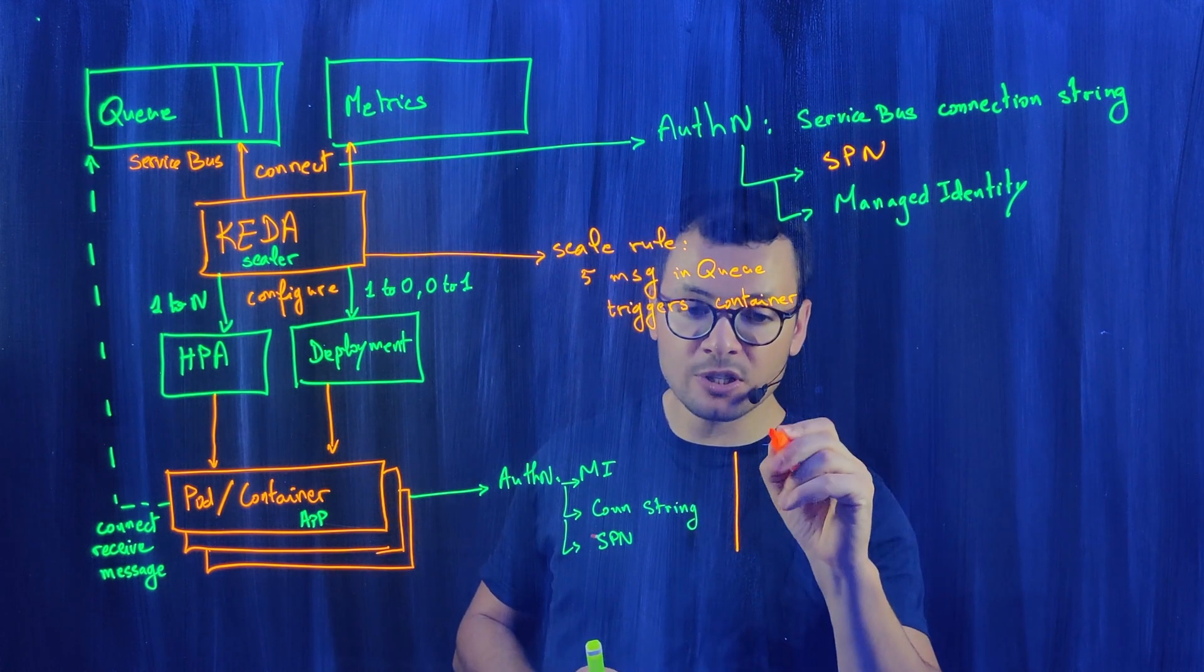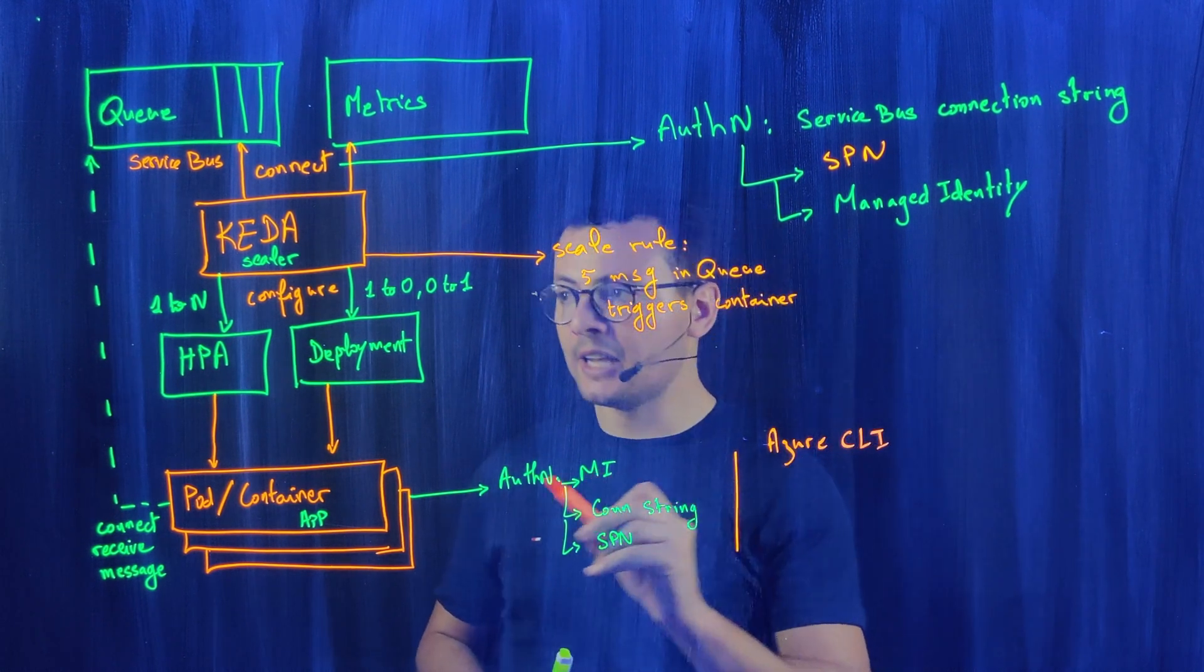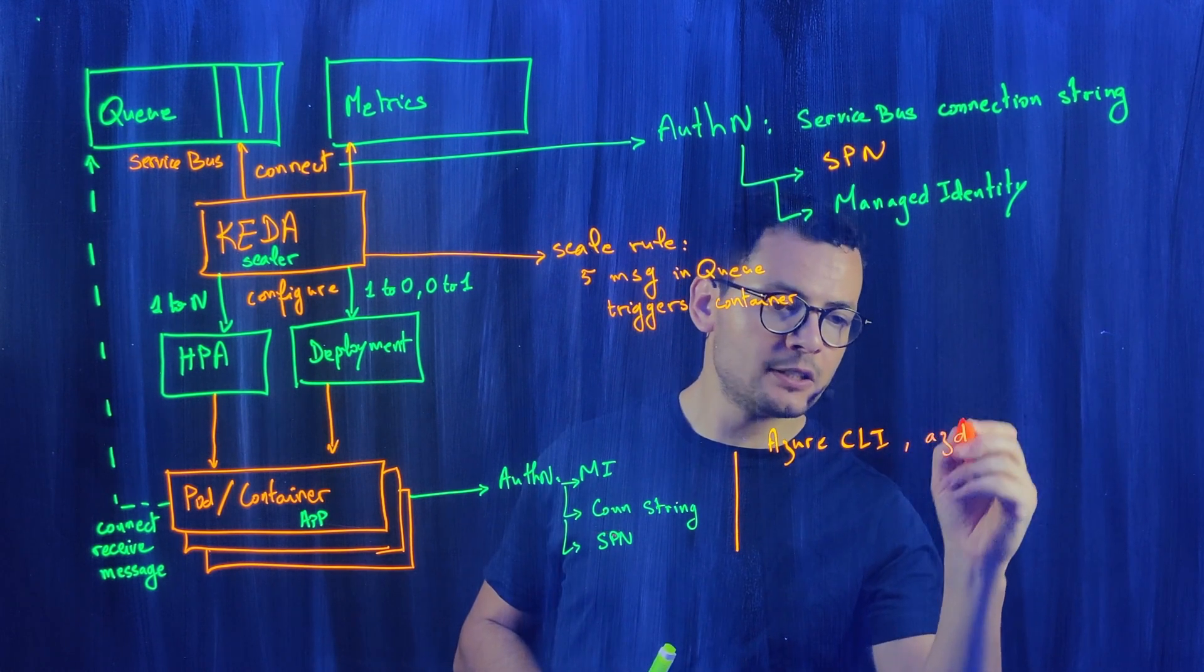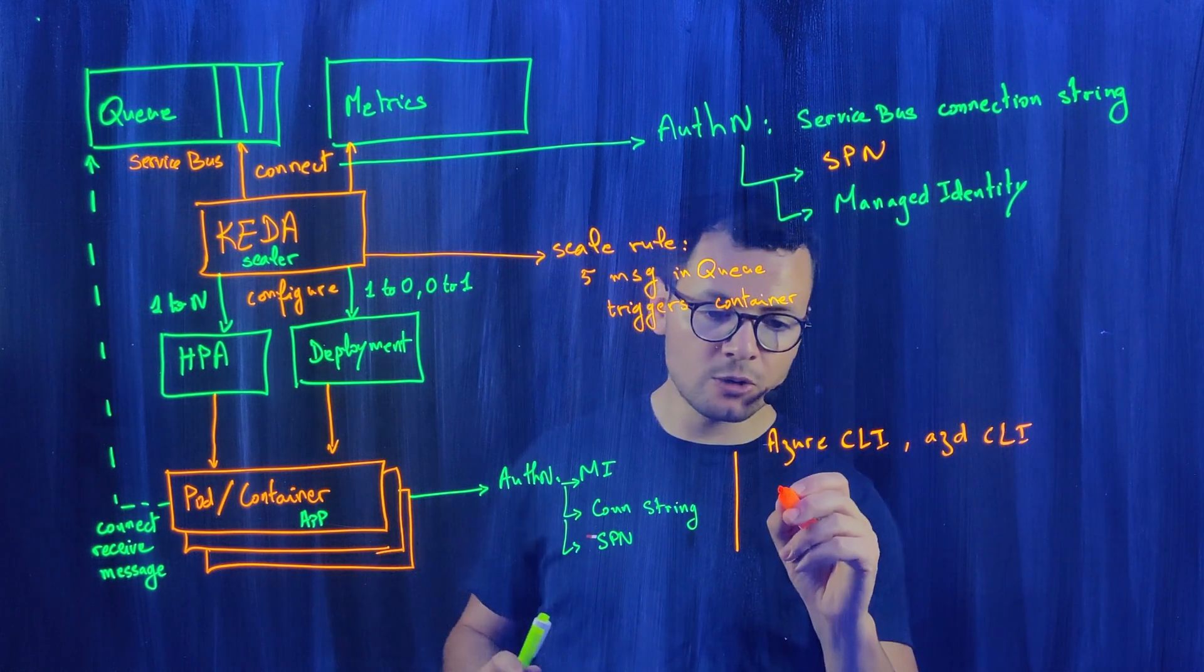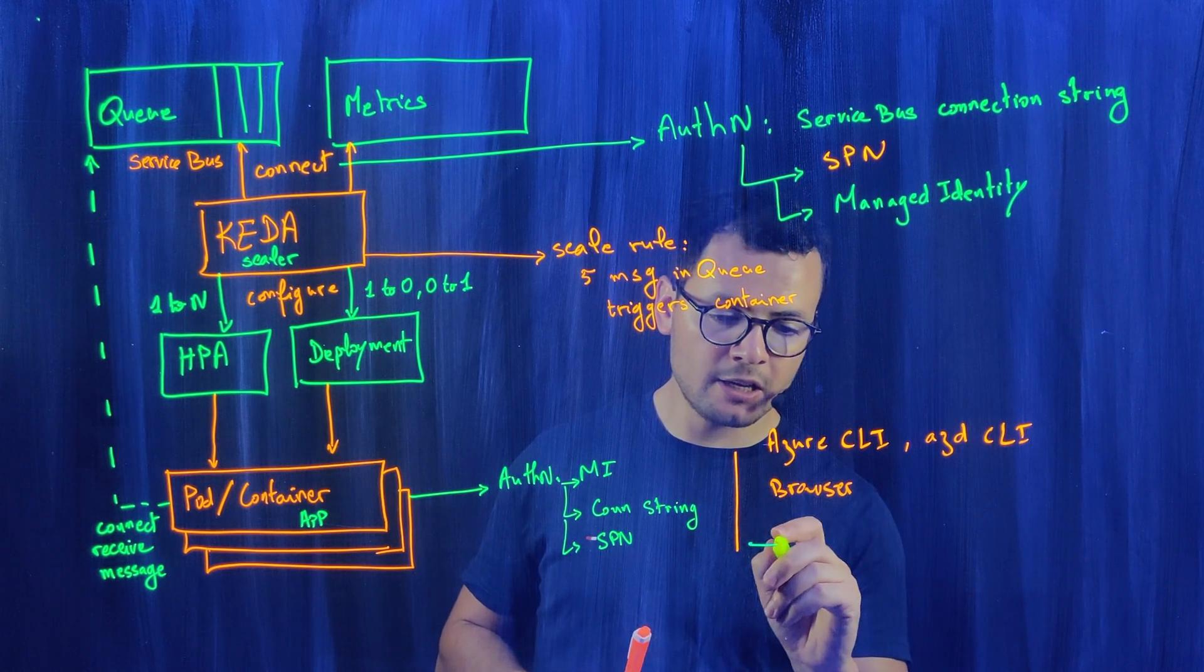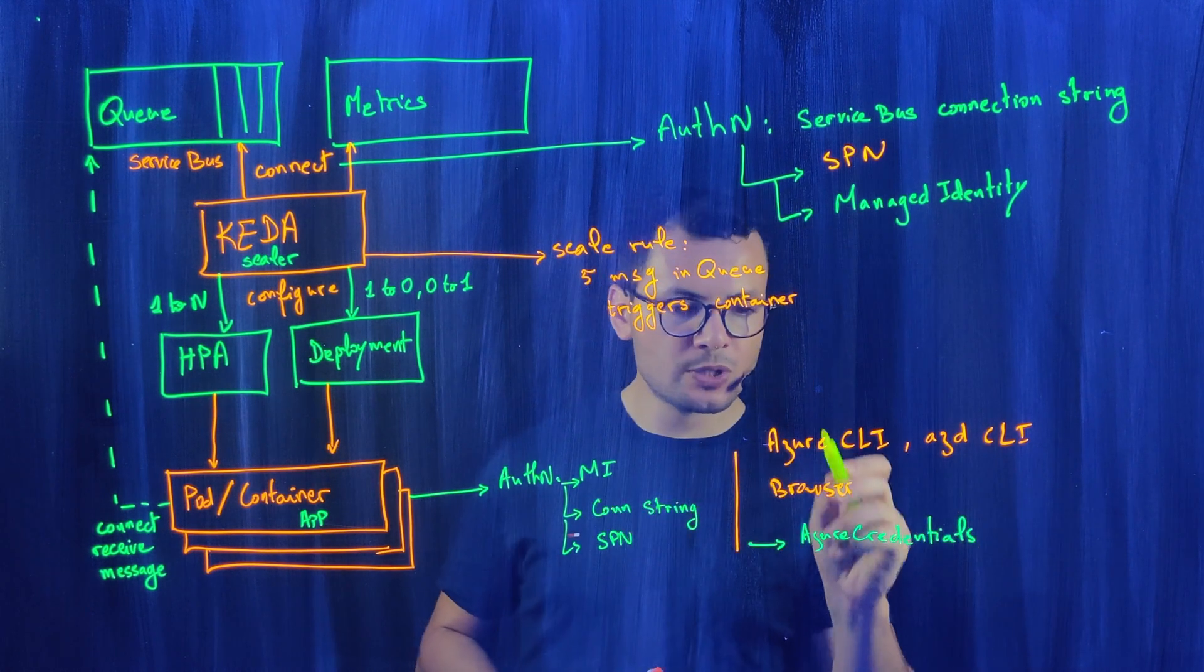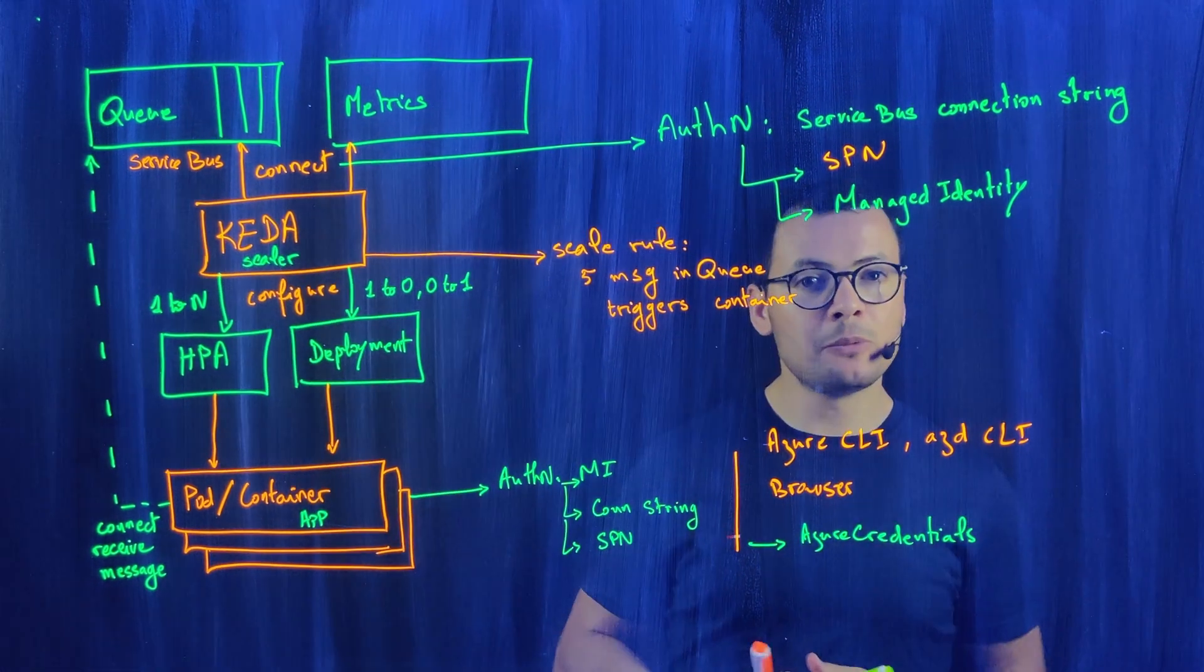So what we can use here is some other options like using the Azure CLI. That user will have the right access role on the queue to perform the receive messages. This also works with the AZD, which is the Azure Developer CLI tool. And the authentication locally could also work within a browser. All of these will be enabled by an object called the Azure credentials, which is an object either in .NET or Python. You can configure it to use the right authentication method so that your application could connect. I hope this was helpful. Thank you.